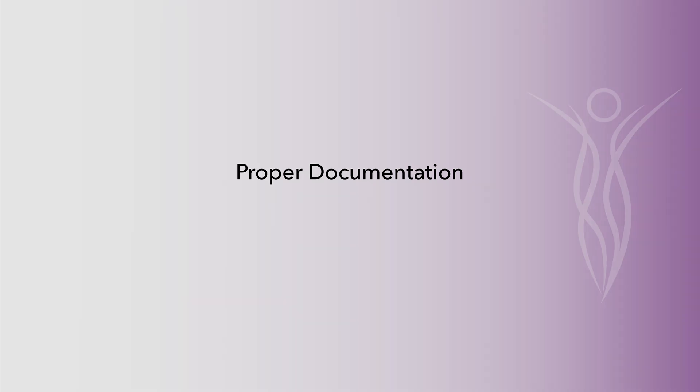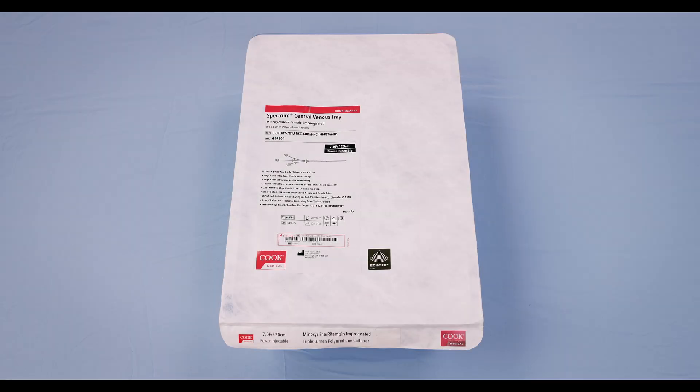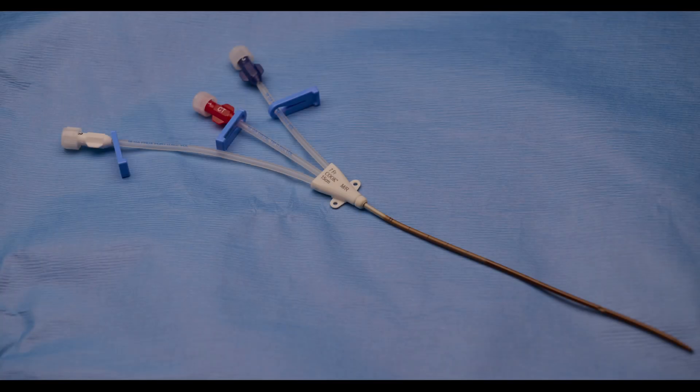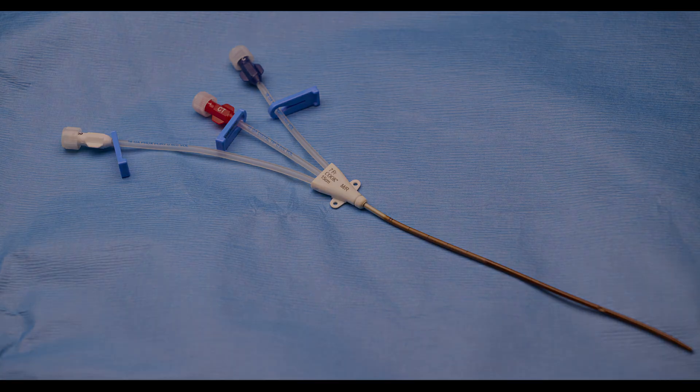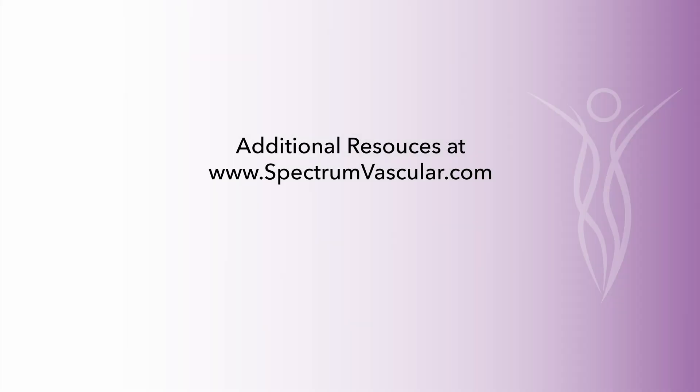Thank you for joining us in this comprehensive overview of the SV Spectrum Central Venous Catheter Triple Lumen Kit. We've explored its innovative features, including the antimicrobial impregnation of minocycline and rifampin designed to reduce catheter-related bloodstream infections. For more detailed information, product specifications, and educational resources, please visit SpectrumVascular.com. Here, you'll find a wealth of materials to support your clinical practice and enhance patient care.